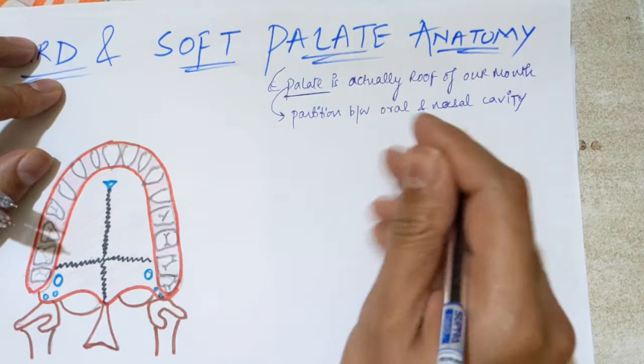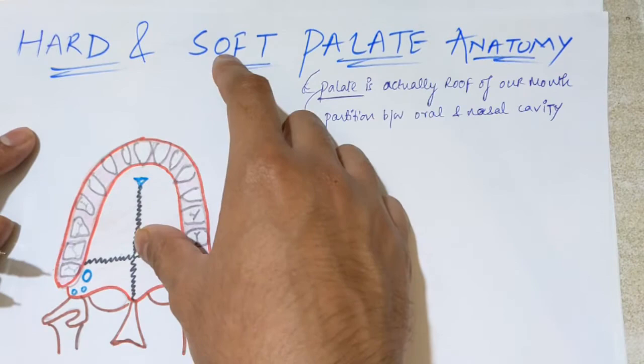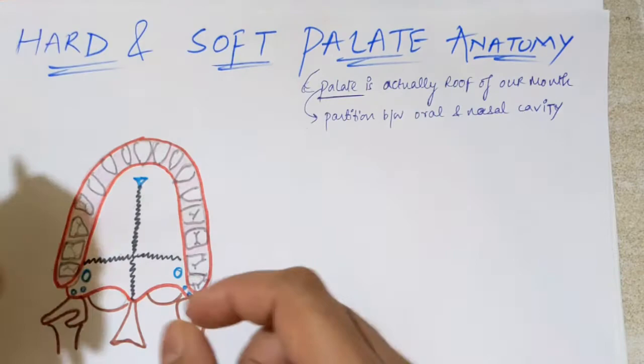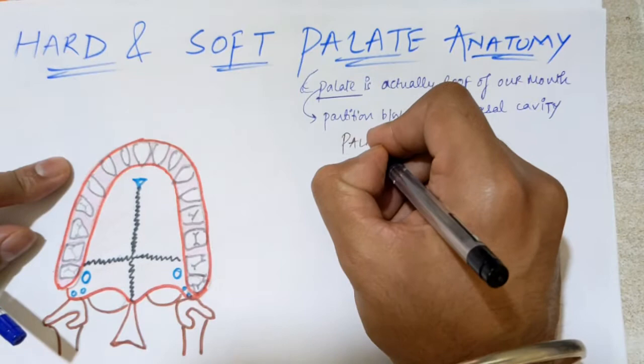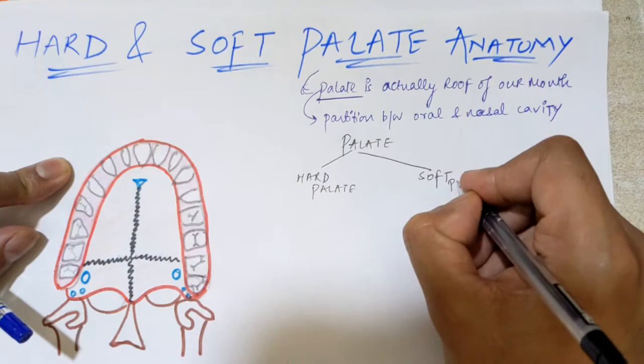The palate is further divided into two structures: hard palate and soft palate. The hard palate is of bony structure, and the soft palate is formed by a duplication of layers of mucous membrane, with muscles and palatine aponeurosis present. So hard palate is formed of bony structure and soft palate is of mucous membrane.